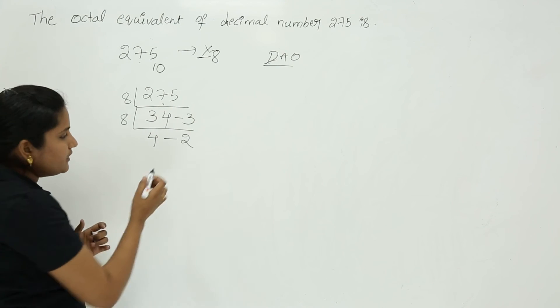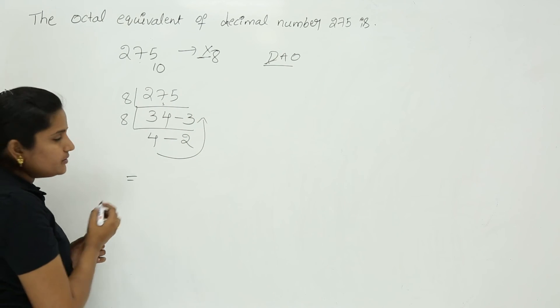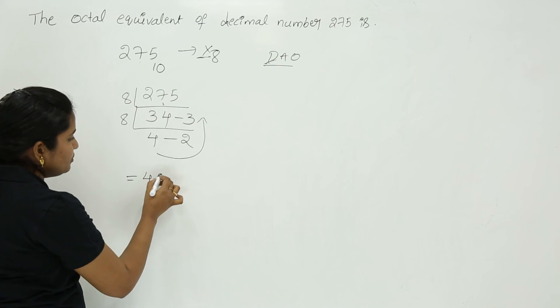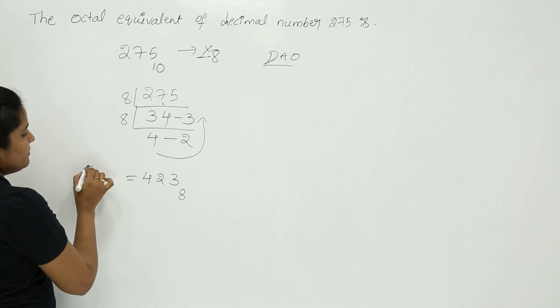We can stop here and we can take the result from bottom to top. If you take the result from bottom to top, the result is 4 2 3. This is the equivalent octal number for the given decimal.